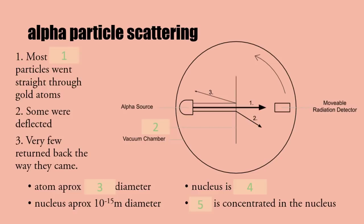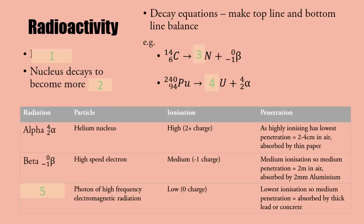Alpha particle scattering: most alpha particles went straight through. Some were deflected - that's path two. Very few turned back the way they came. Rutherford said it's like an artillery shell hitting tissue paper and coming back. The atom is approximately 10 to the minus 10 diameter and the nucleus is approximately 10 to the minus 15. The nucleus is positive and where all the mass is concentrated.